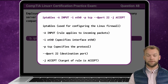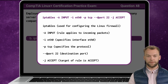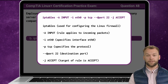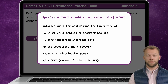The iptables command is used for configuring the Linux firewall, allowing administrators to manage network traffic by defining rules and policies. The -A INPUT option specifies that the rule being added applies to incoming packets, appending the rule to the end of the input chain. The -i option specifies the network interface — in this case, the Ethernet Zero interface. The -p TCP option specifies the protocol. The --dport 22 option specifies the destination port; since remote connections often use SSH, which by default operates on port 22, --dport 22 ensures that the rule applies to SSH traffic.